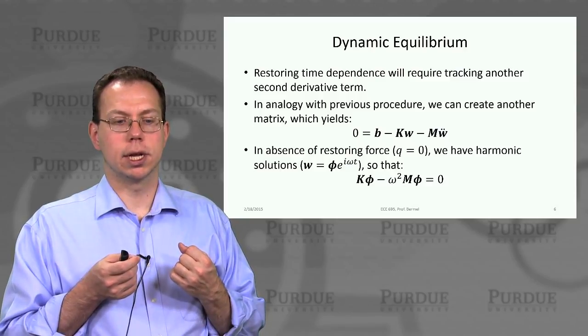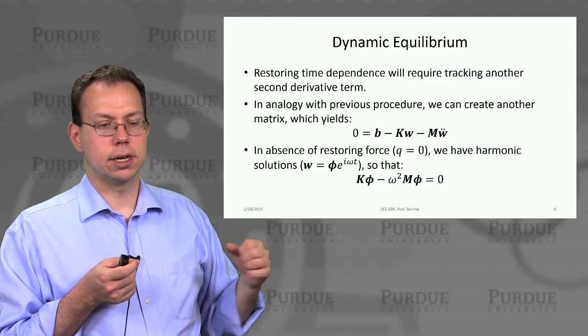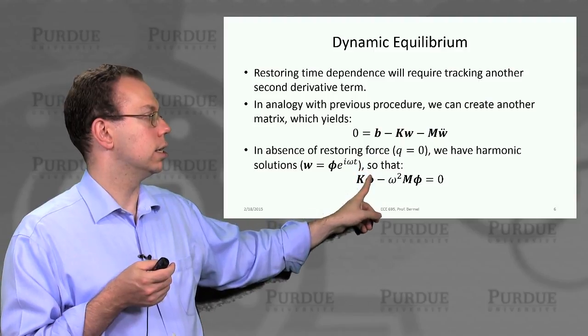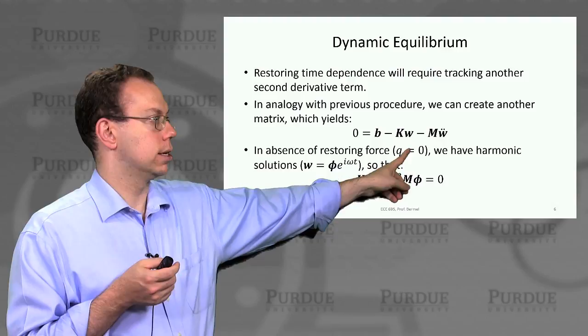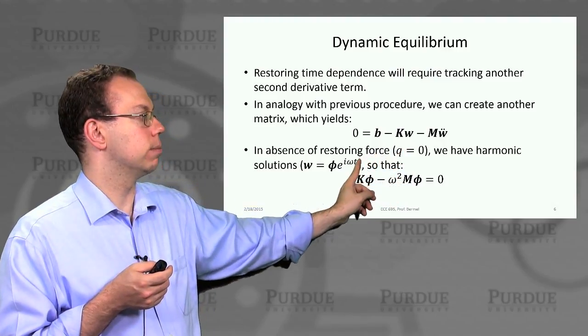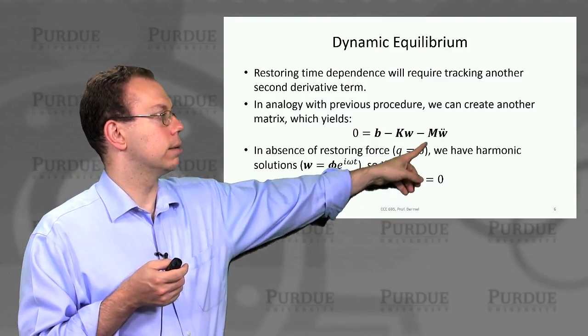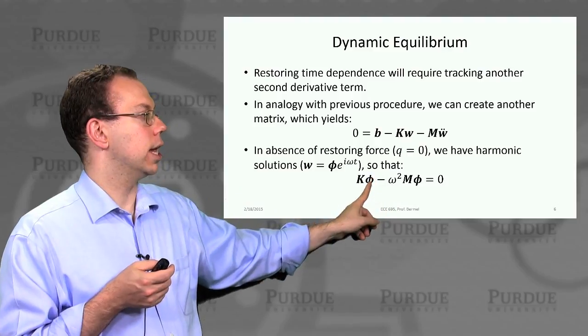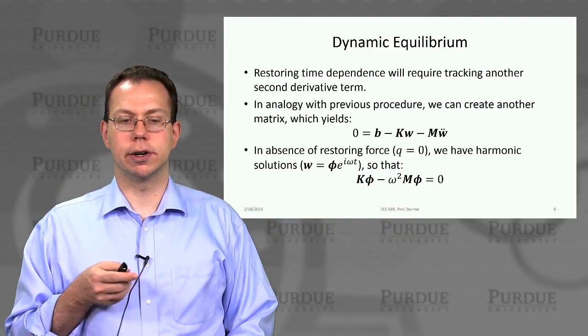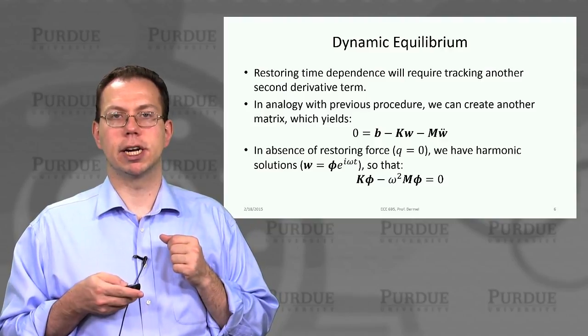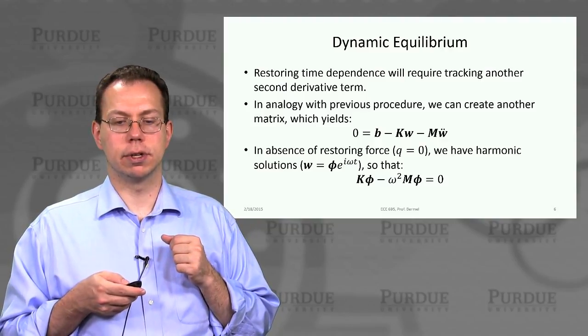If we assume there's no harmonic restoring force, then we have KW plus MW double dot equals zero. We've dropped the B term, and we can assume harmonic solutions, because this is a glorified harmonic oscillator equation. That gives us W equals phi times e to the i omega t, and W double dot gives us a factor of minus omega squared.